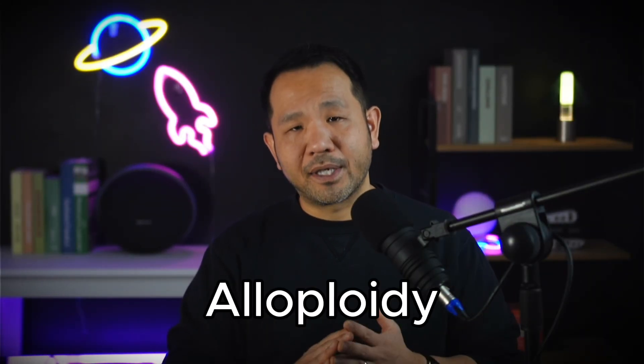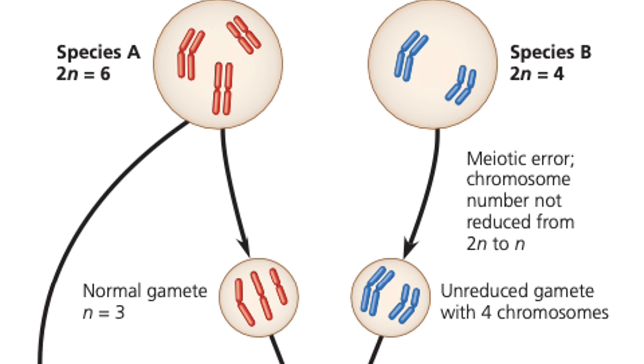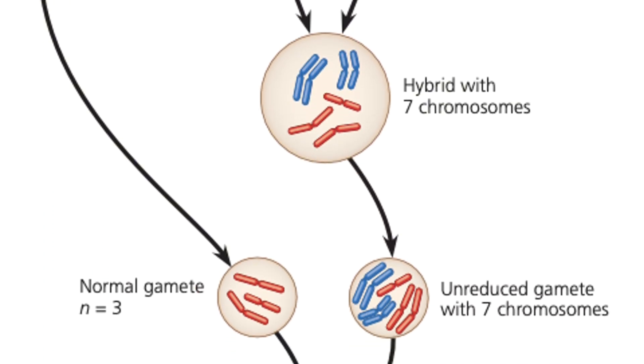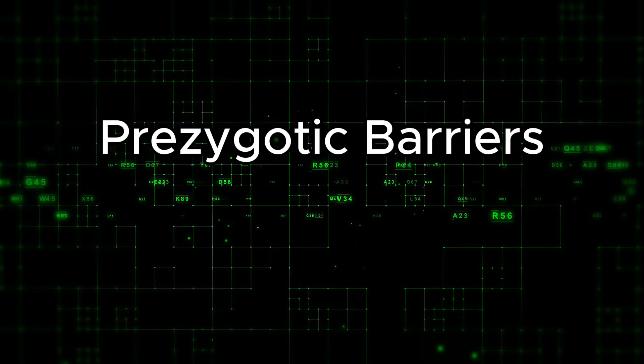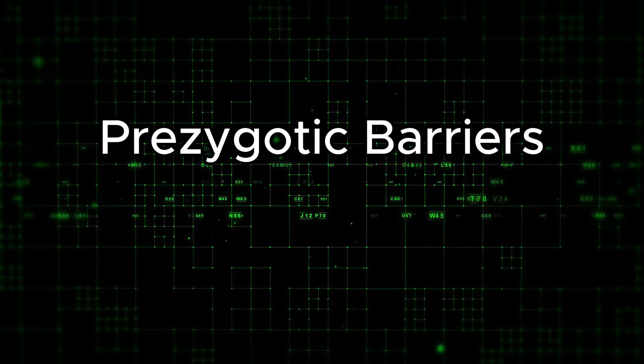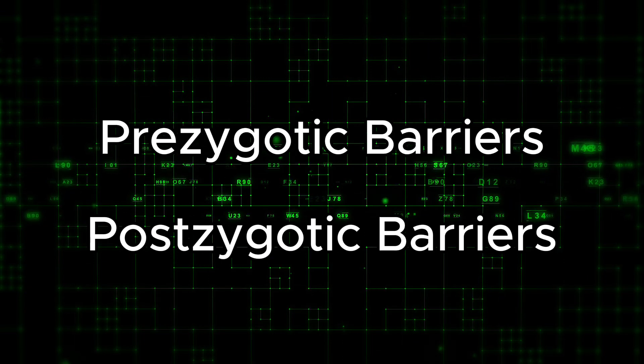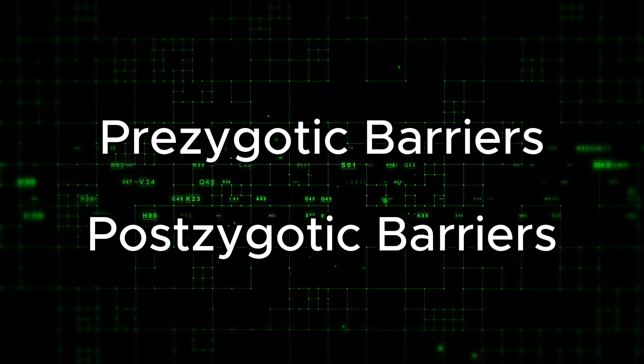The third mechanism is allopolyploidy. This is not common in animals, which have very specific chromosomal structure requirements, but more common in plants. The AP Biology curriculum isn't deeply focused on this topic, so we'll move on. Now that we've talked about allopatric speciation and sympatric speciation, let's take a look at the reproductive barriers that work to reinforce these speciation events. We divide reproductive barriers into two major types: prezygotic barriers that inhibit the formation of the zygote altogether, and postzygotic barriers, which still inhibit the convergence of two species back into a single species even if a zygote were to form.